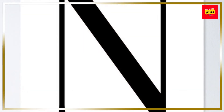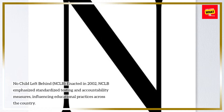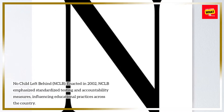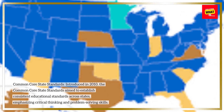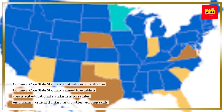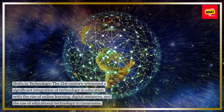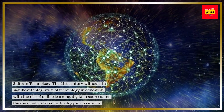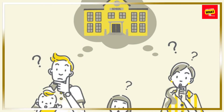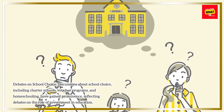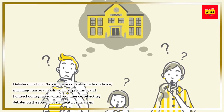21st Century. No Child Left Behind (NCLB), enacted in 2002, emphasized standardized testing and accountability measures, influencing educational practices across the country. The Common Core State Standards, introduced in 2010, aimed to establish consistent educational standards across states, emphasizing critical thinking and problem-solving skills. The 21st century also witnessed significant integration of technology in education, with the rise of online learning, digital resources, and educational technology in classrooms. Discussions about school choice — including charter schools, voucher programs, and homeschooling — have gained prominence, reflecting debates on the role of government in education.